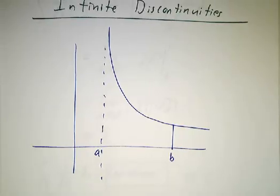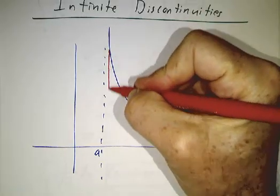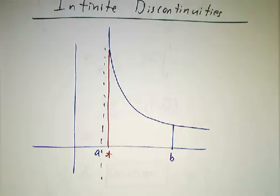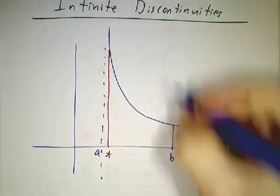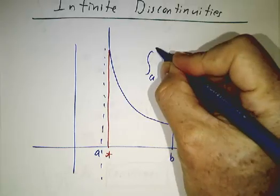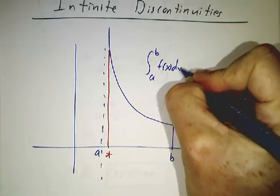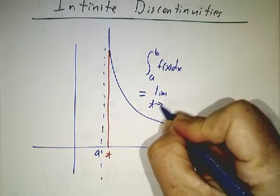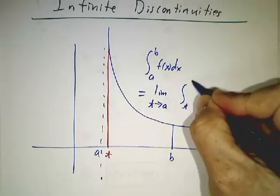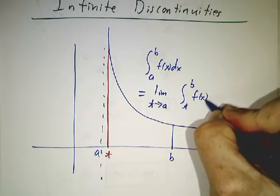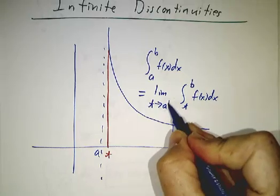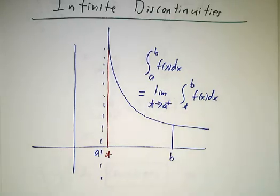And again, our picture is we can't integrate all the way to a, but we can integrate all the way to a nearby point t. And then we can take the limit as t approaches a. The integral from a to b of f dx is the limit as t approaches a of the integral from t to b of f dx. And t is always a little bit bigger than a in this situation, so we say t approaches a from above.